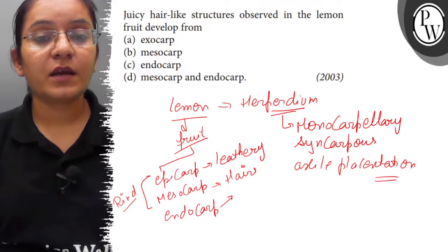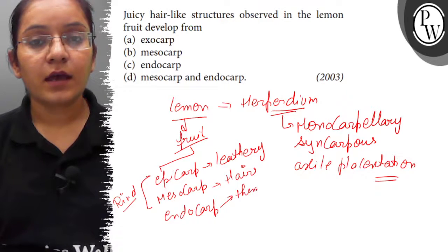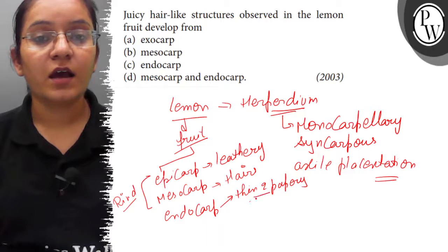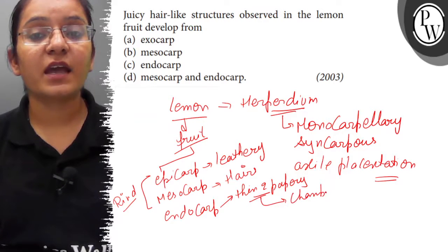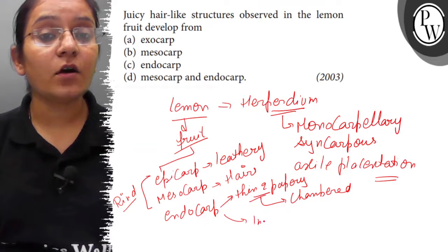Endocarp becomes thin and papery, very thin, and forms chambers. These are called chambers, compartments, and inner wall.